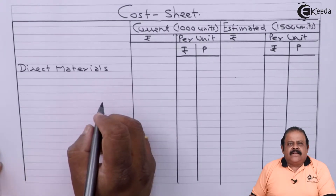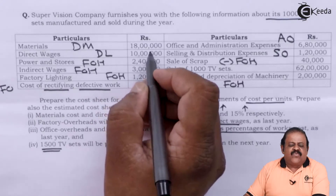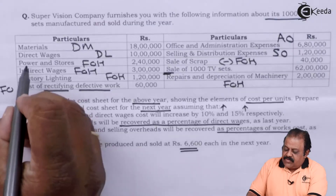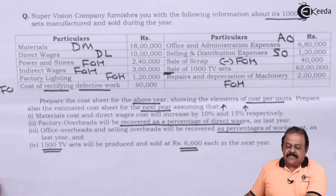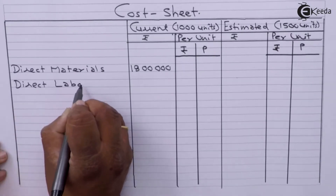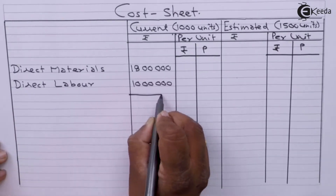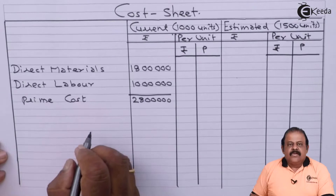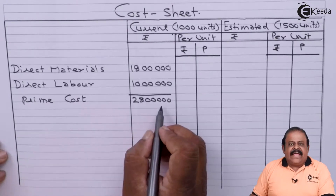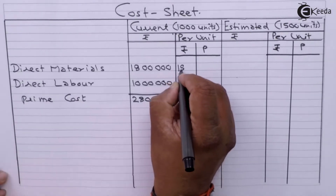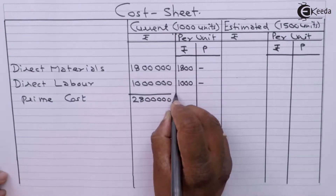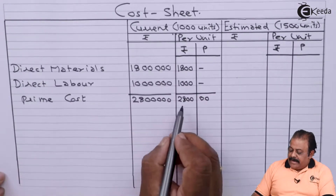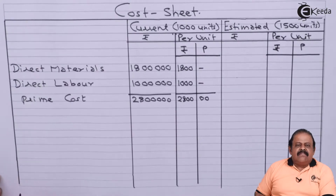First, direct materials: material they have given 18 lakhs for the first period. Next we have direct labor: 10 lakhs. So we got prime cost Rs. 28 lakhs. Prime cost per unit will be Rs. 2800. To this we are going to add factory overheads.